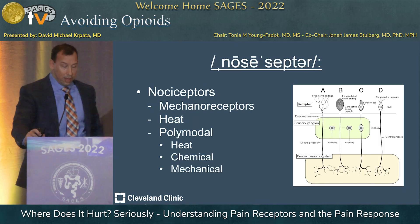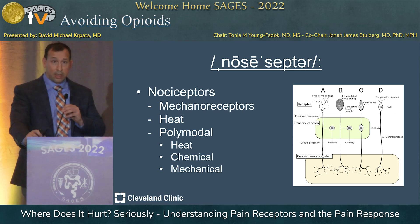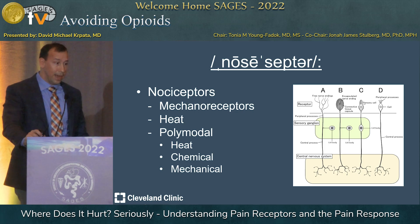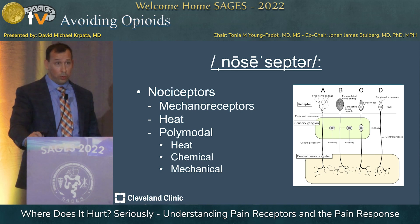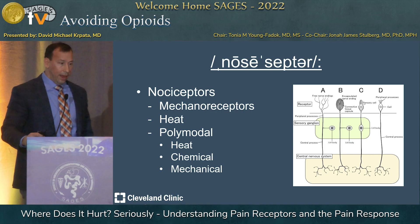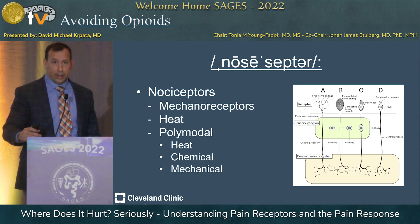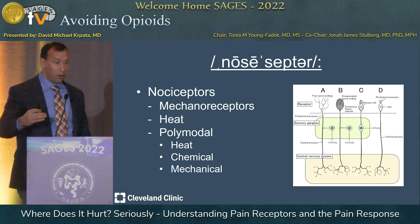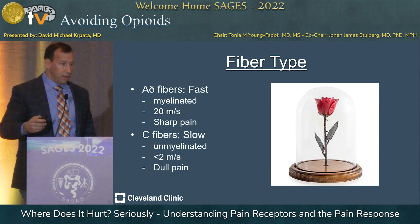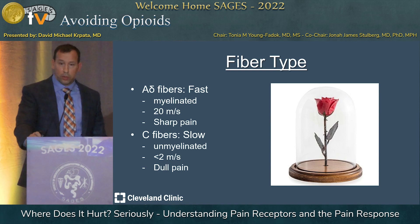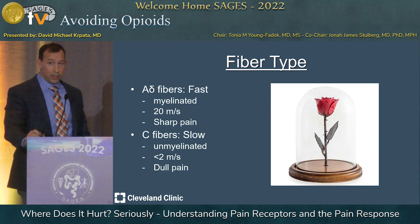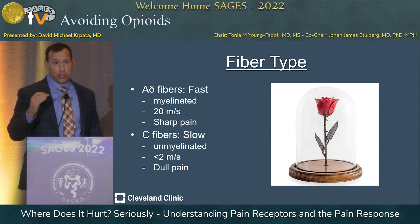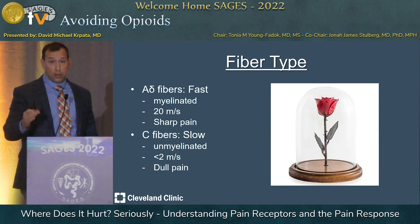Pain receptors are known as nociceptors. There are many ways you can activate them — either mechanically, thermally, or through polymodal approaches with chemical stimulation, which for our purposes is inflammation. These are on free nerve endings that run as primary first-order neurons to the spine. There are two major fiber types: the alpha-delta fibers, which are the fast fibers — they're myelinated and send a signal at 20 meters per second — and they are responsible for sharp pain. C fibers are the other type; these are slow, at two meters per second, and are more responsible for dull pain.